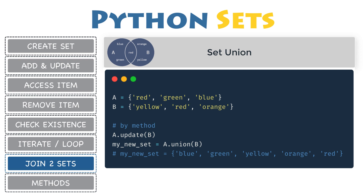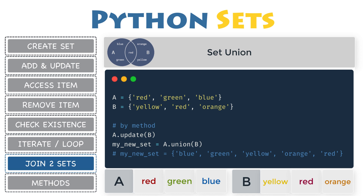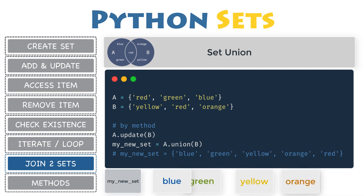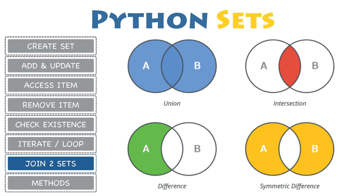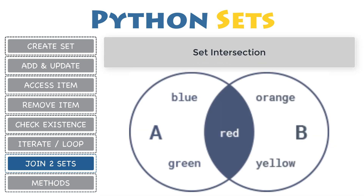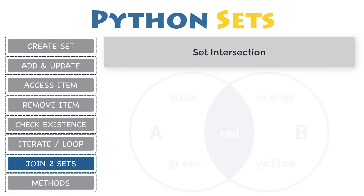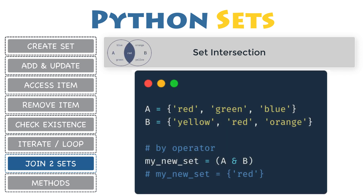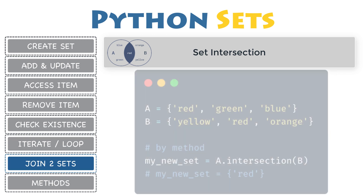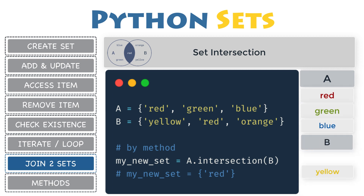Or use the method update, that inserts all the items from one set into another set. For instance, let's declare a first set A with the items red, green, and blue, then a second set B with the items yellow, red, and orange. Either using the method union or the pipe operator, both resulting sets will contain all items from both sets combined. Set intersection: intersection of the sets A and B is the set of items common to both A and B. You can perform intersection on two or more sets using the method intersection or an operator. Consequently, the intersection of both sets will result in a new set containing only the item red, which is the unique item common to both A and B.